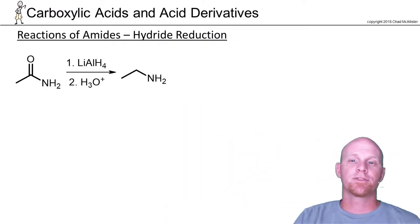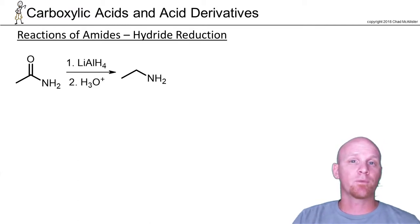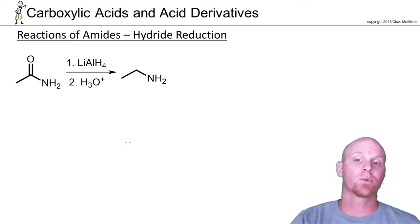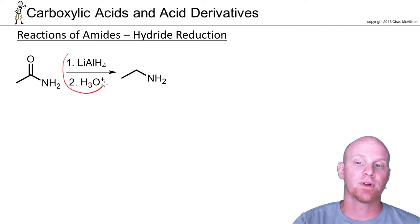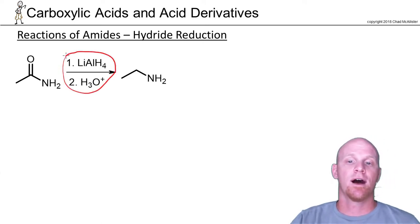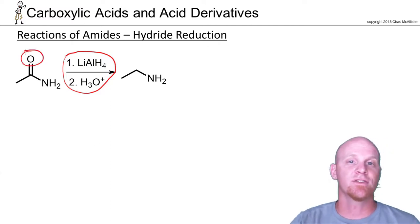Now we'll dive into looking at the reactions of amides. As mentioned, they're low on the reactivity scale, so there's not a whole lot here. We don't have to worry about them reacting with organometallics in any way, shape, or form. We do have one hydride reduction, which is a little unique — we're going to use lithium aluminum hydride. Sodium borohydride does not react with amides, and instead of doing normal nucleophilic acyl substitution, it actually does deoxygenation.